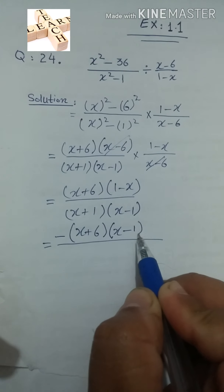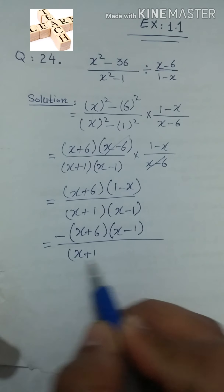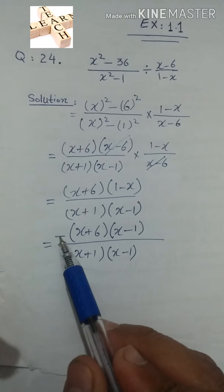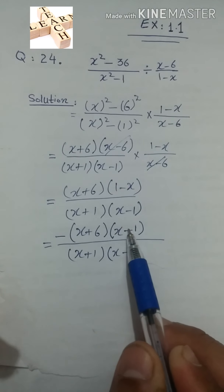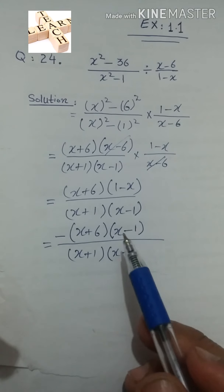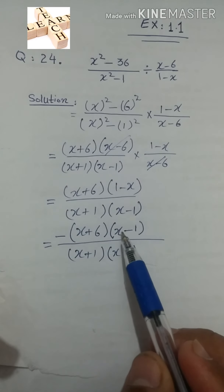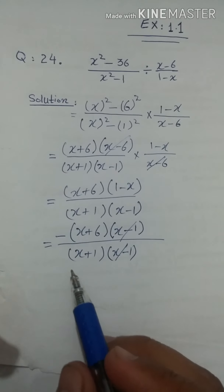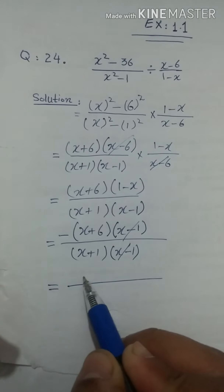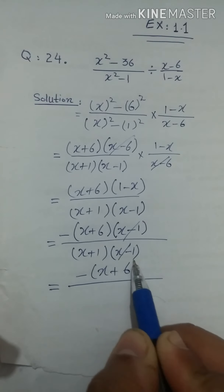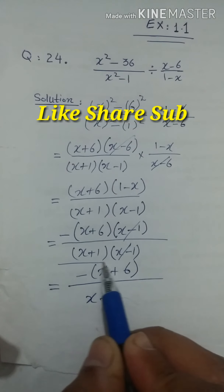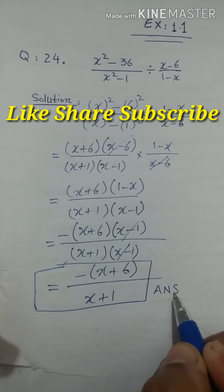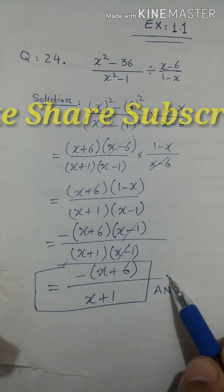यानि के minus(x minus 1)। तो ऊपर आ जाएगा minus(x+6)(x-1) और नीचे (x+1)(x-1)। अब x minus 1 ऊपर और नीचे दोनों जगह है — cancel हो गए। तो बाकी हमारे पास बचा: minus(x+6) divided by (x+1)। यही है answer of question number 24 of exercise number 1.1।